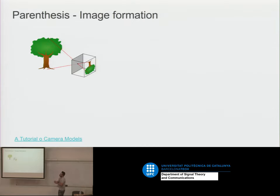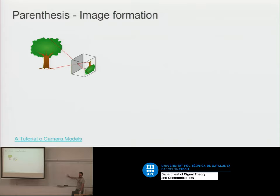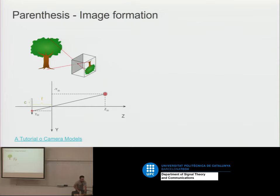Let me do a very fast parenthesis about multi-view geometry, so we can understand how this f function is created. Normally we use multi-view geometry to explain mathematically how points travel from 3D to 2D. Imagine a point in 3D — there is a straight line that goes from that point to the image. Depending on the camera model we use, we travel in one way or another. We have the focal length f and the camera center c — the optical center — and with these parameters I can compute the slope projecting into the image plane.